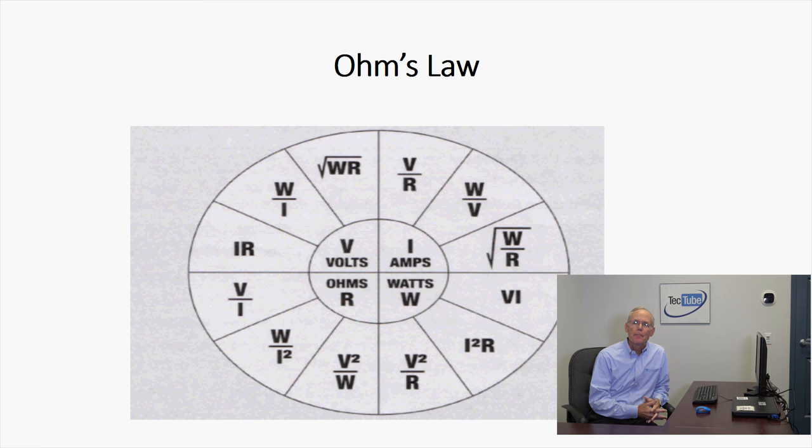Now, how do we figure all that? Well, this is Ohm's law. This seems complicated. We try to put it into a wheel like this. You can get this on the internet or you can see your TECTM. They can get it for you. You can see that we have volts, amps, ohms signified as R, and watts signified as W.